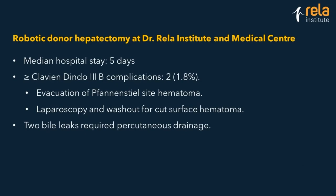When you look at major complications, we have had two re-explorations: one was a falciform ligament hematoma which required evacuation, and the other was a hematoma of the cut surface — we explored for bleeding, didn't find any bleeding, and laparoscopically evacuated the hematoma with no further bleeding. Only two bile leaks required percutaneous drainage. There have been five other bile-stained drains which settled. No other major complications with the robotic donor hepatectomies.